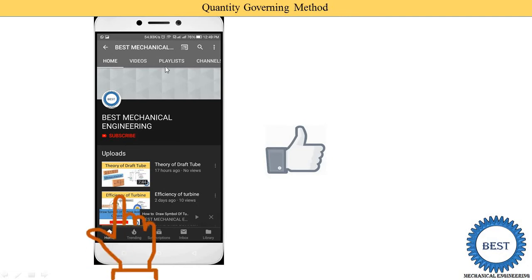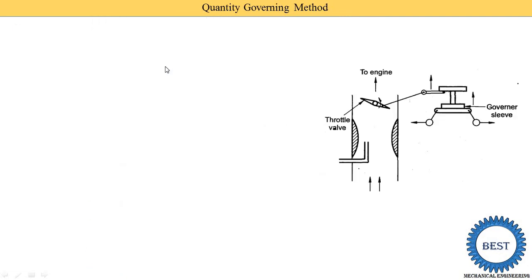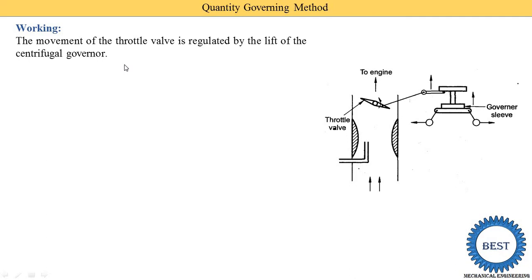Also visit the playlist for watching various videos of mechanical engineering. Now I explain the working for a stationary engine. The movement of the throttle valve is regulated by the lift of the centrifugal governor. The position of the throttle valve — when it is in the vertical position it is fully open and more quantity is going through. So we need to control the throttle valve, and this throttle valve position is controlled by using the governor.